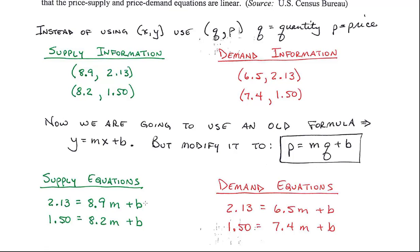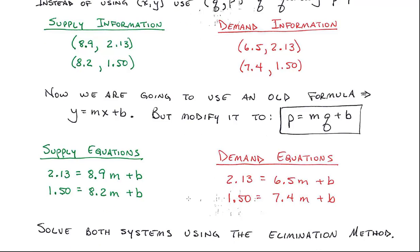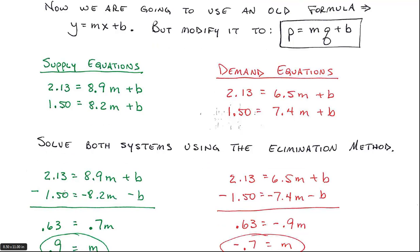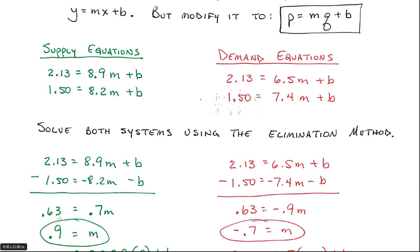It's to my advantage to get rid of the Bs. So what I did for both of these is multiplied the bottom equation through by a negative 1, and I combined like terms by adding. So this came out to be 0.63 equals 0.7M. So the slope for my supply equation is 0.9. Over here, my slope came out to be a negative 0.7.